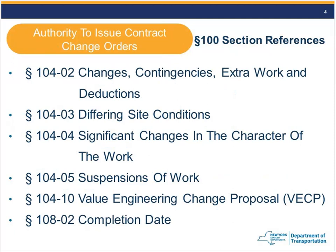Who has the authority to issue change orders? The department as a whole has that authority. When looking at the 100th section, the engineer is generally the one acting, but they act on behalf of the department. The relevant subsections are found in Section 104: 104-02 covers changes, contingencies, extra work, and deductions.